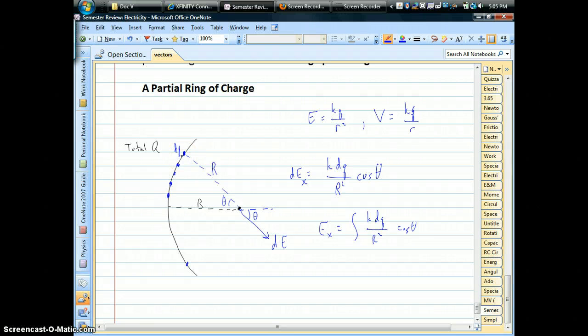all these little DQs we can assume are the same, the angles are different, which means their components are different. So theta is the variable in this problem.